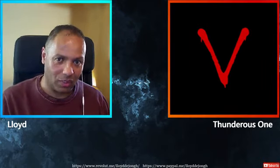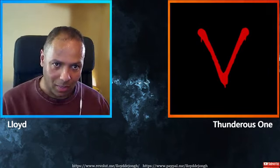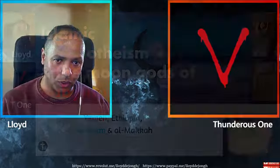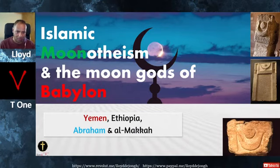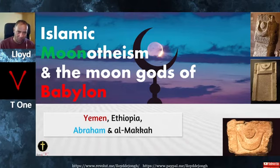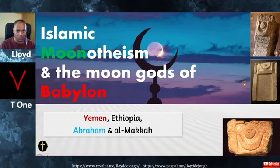We're going to be talking about the early beginnings of Islam — proto-Islam and how Islam originally started or evolved out of Babylonian monotheism, out of Babylonian moon worship. That particular thesis has been discussed for a couple of decades; however, it is very credible and as we go through the series we will discover why. The topic is Islamic moon atheism and the moon gods of Babylon.